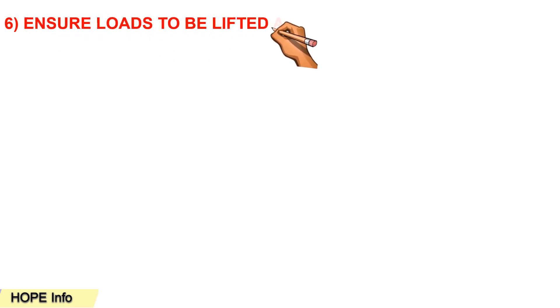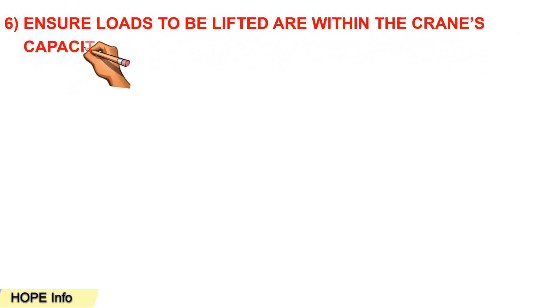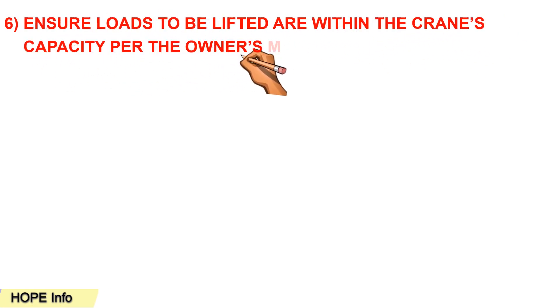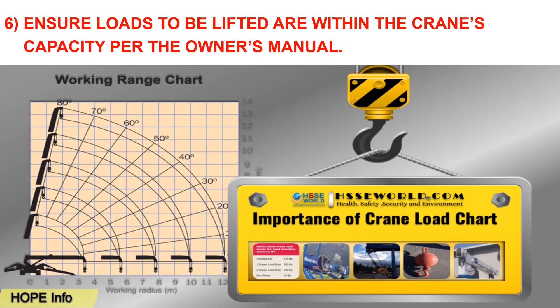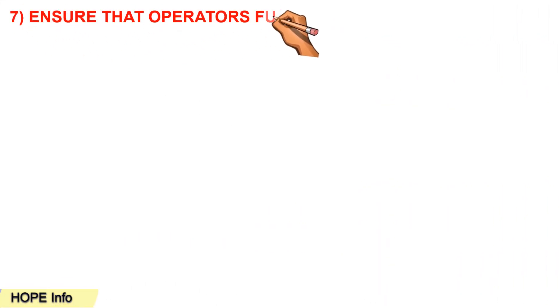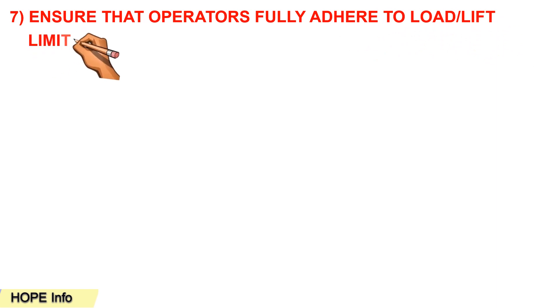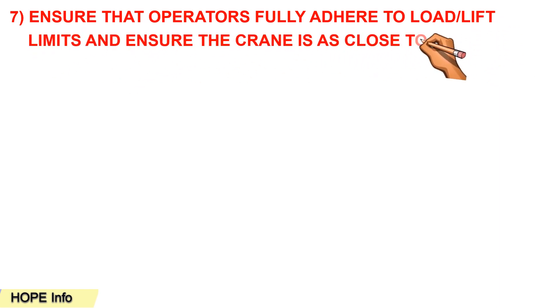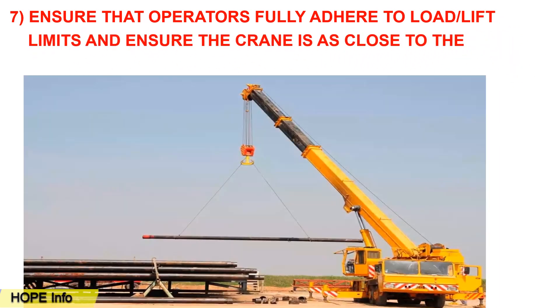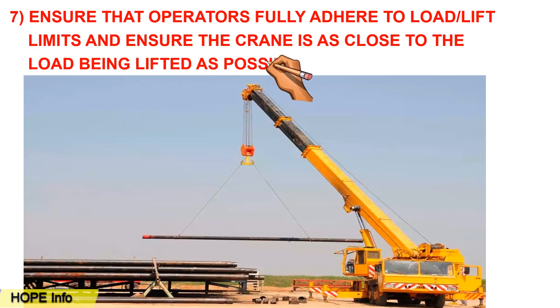The sixth tip is to ensure that loads to be lifted are within the crane's capacity per the owner's crane manual — you should check the load charts and know which types of loads can be lifted during the operation. The seventh tip is to ensure that operators adhere to load lifting limits and that the crane is as close to the load being lifted as possible.